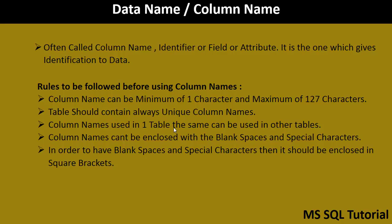Rule four: column names cannot contain blank spaces or special characters such as ampersand, percent, and similar symbols. Rule five: if there are any blank spaces in the column name, it must be enclosed in square brackets. For example, if you write 'employee ID' with a space, there should be no space between them; if there is, enclose it in square brackets. These are all the rules for data names.